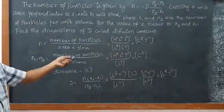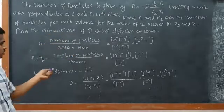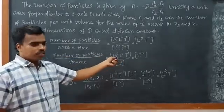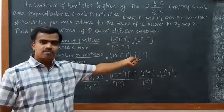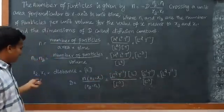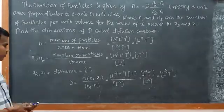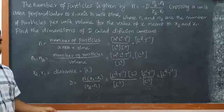And n1 and n2 are given as the number of particles per unit volume. So number of particles per unit volume, again the number of particles equals zero and volume is L cube. So we can write as L to the power minus 3. And x2 and x1 are distance, therefore we can write as L.